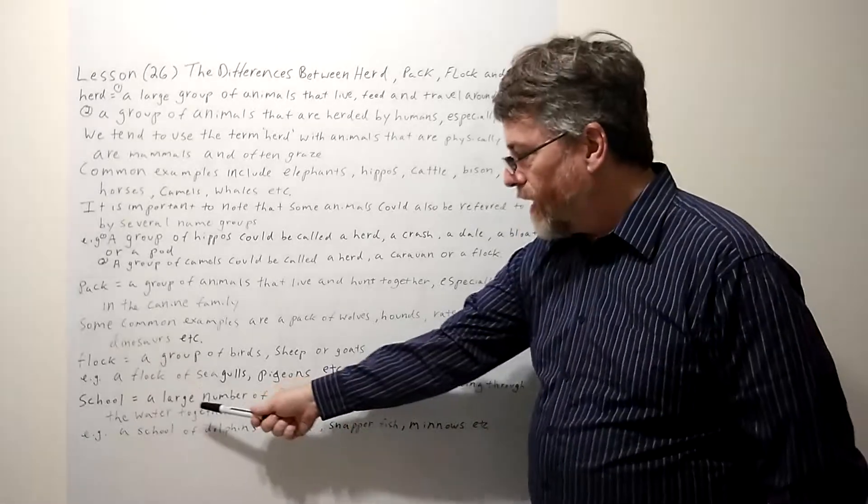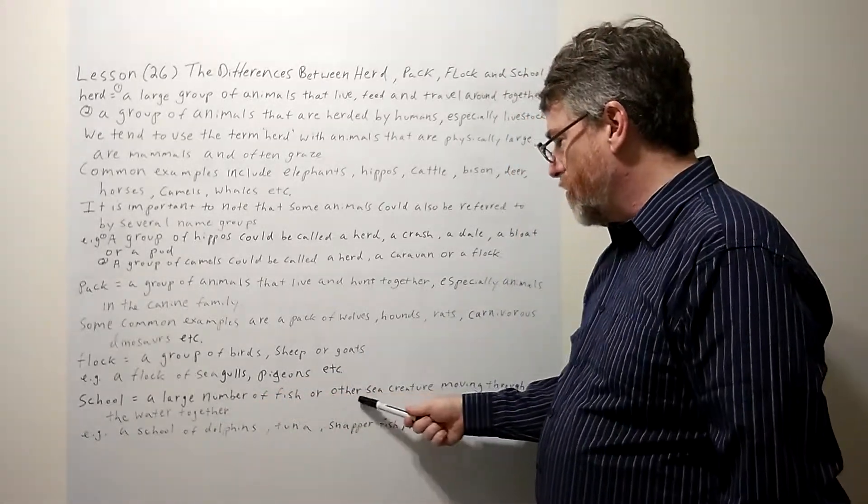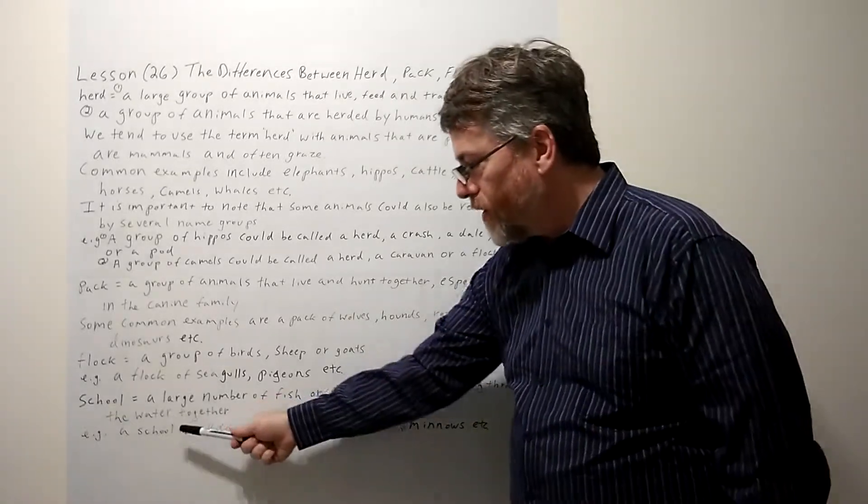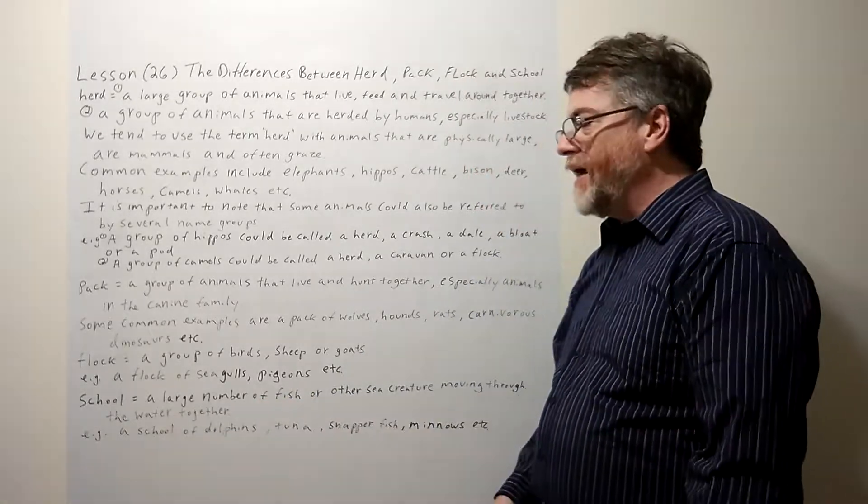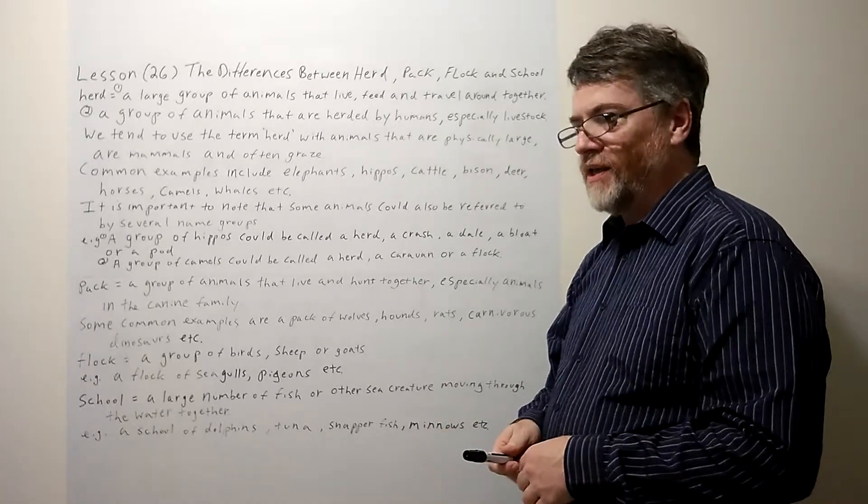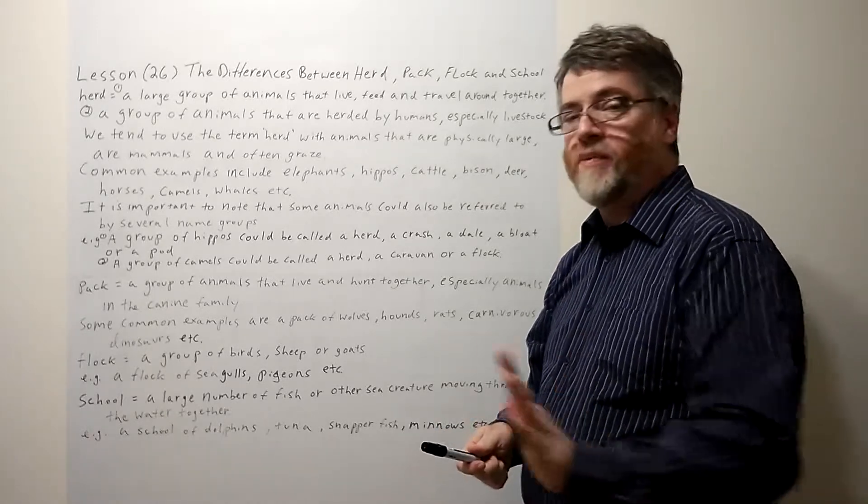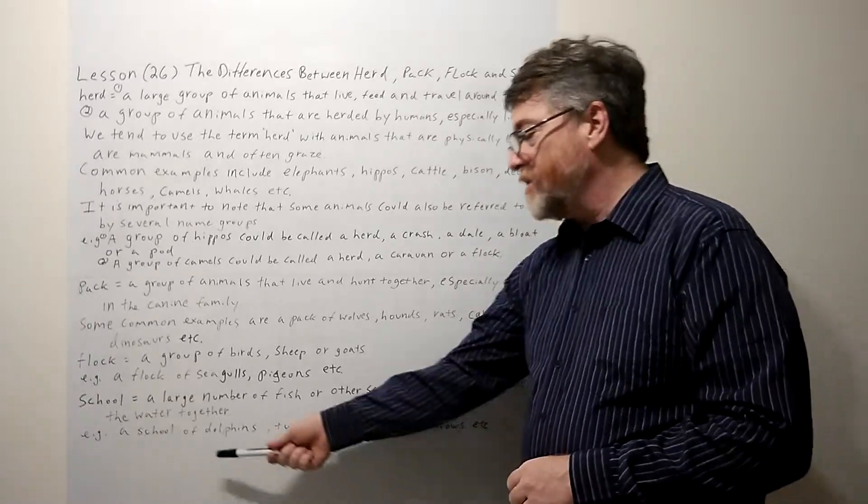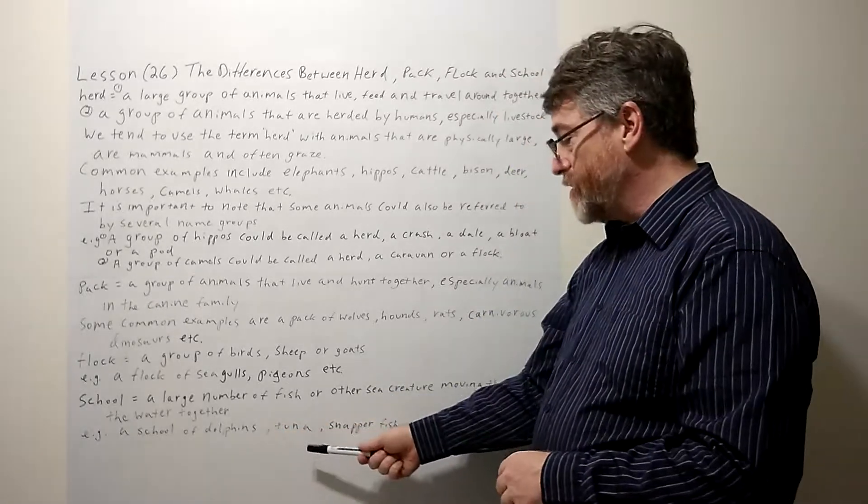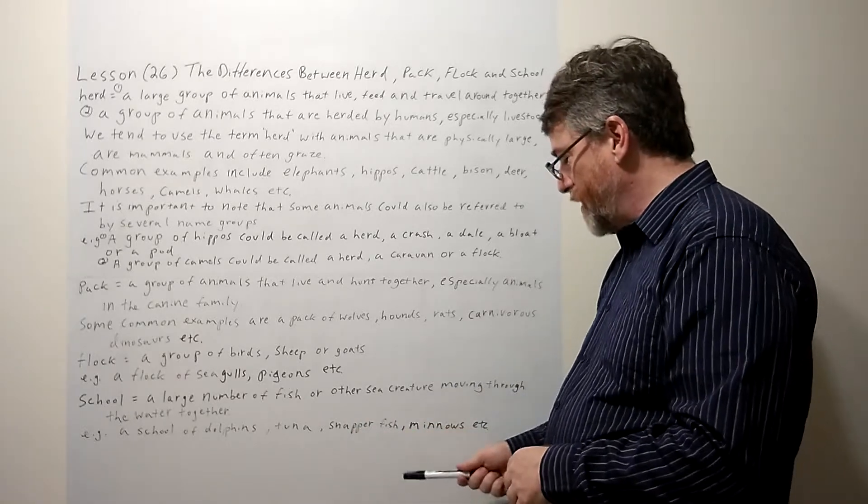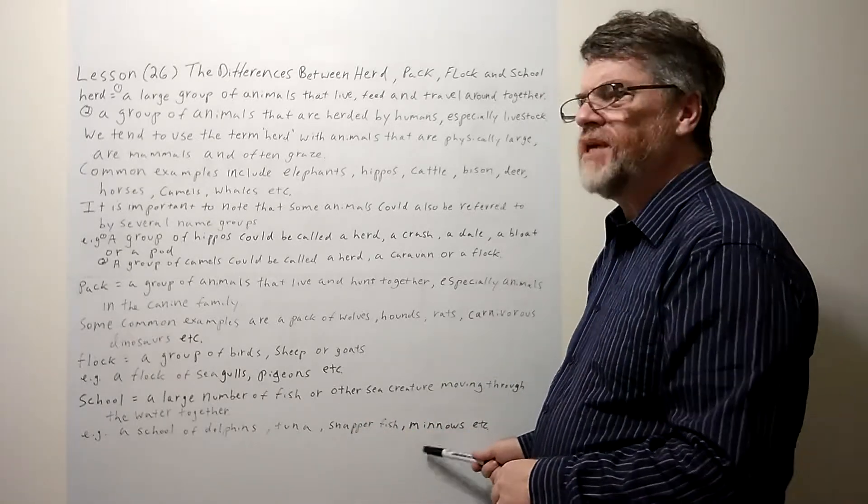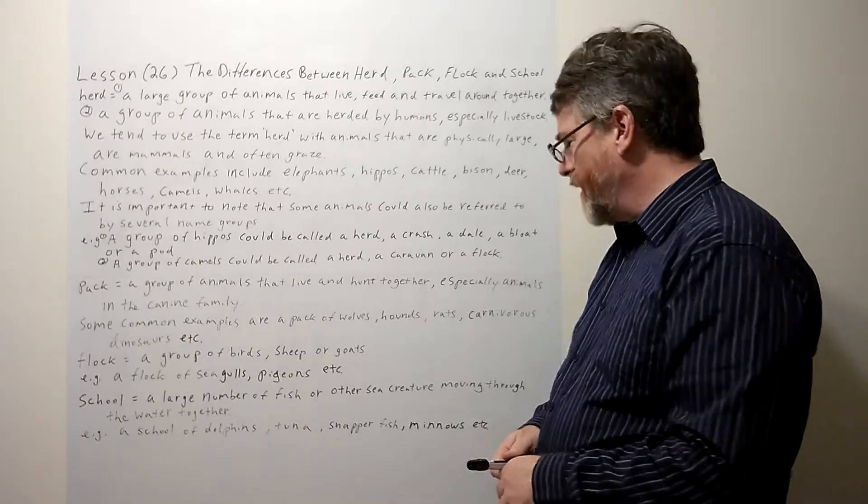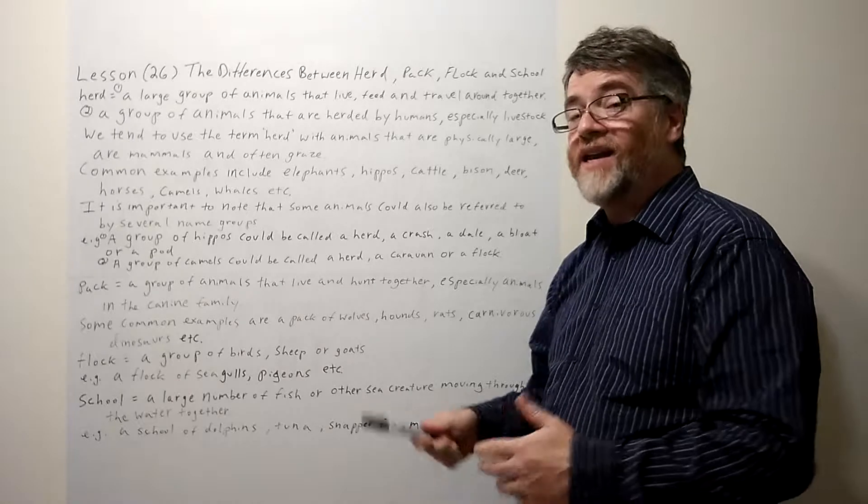The last one is school. A large number of fish or other sea creatures moving through the water together. We use it with a lot of different fish, especially when you see all the fish swimming in the same direction, swimming together. We say school of dolphins, school of tuna, snapperfish, minnows. I think minnows were the one that was in the Finding Nemo movie.